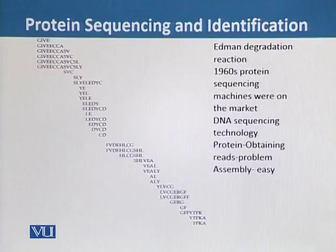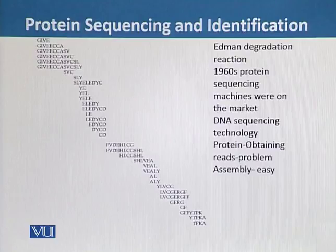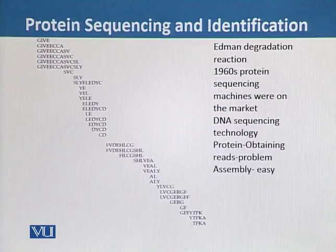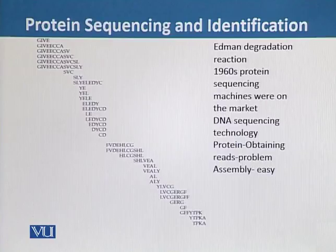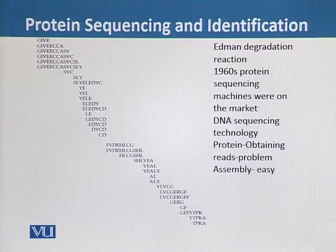The Edman degradation reaction became the predominant protein sequencing method for the next 20 years, and by the late 1960s protein sequencing machines were available. Despite these advances, protein sequences ceased to be of central interest as DNA sequencing technology underwent rapid improvements in the late 1970s. In DNA sequencing, obtaining reads is relatively easy but assembly is difficult, while in protein sequencing, obtaining reads is the primary problem and assembly is easier.